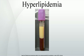Hyperlipidemias may be classified as either familial, caused by specific genetic abnormalities, or acquired, when resulting from another underlying disorder that leads to alterations in plasma lipid and lipoprotein metabolism. Hyperlipidemia may also be idiopathic, i.e., without known cause. Hyperlipidemias are also classified according to which types of lipids are elevated: hypercholesterolemia, hypertriglyceridemia, or both in combined hyperlipidemia. Elevated levels of lipoprotein may also be classified as a form of hyperlipidemia.